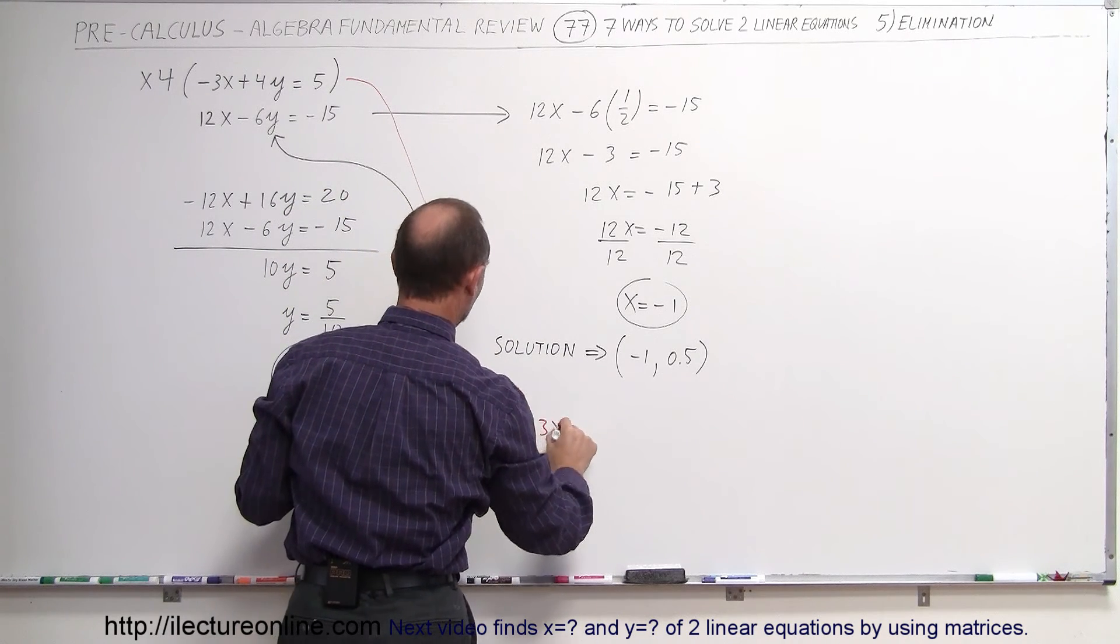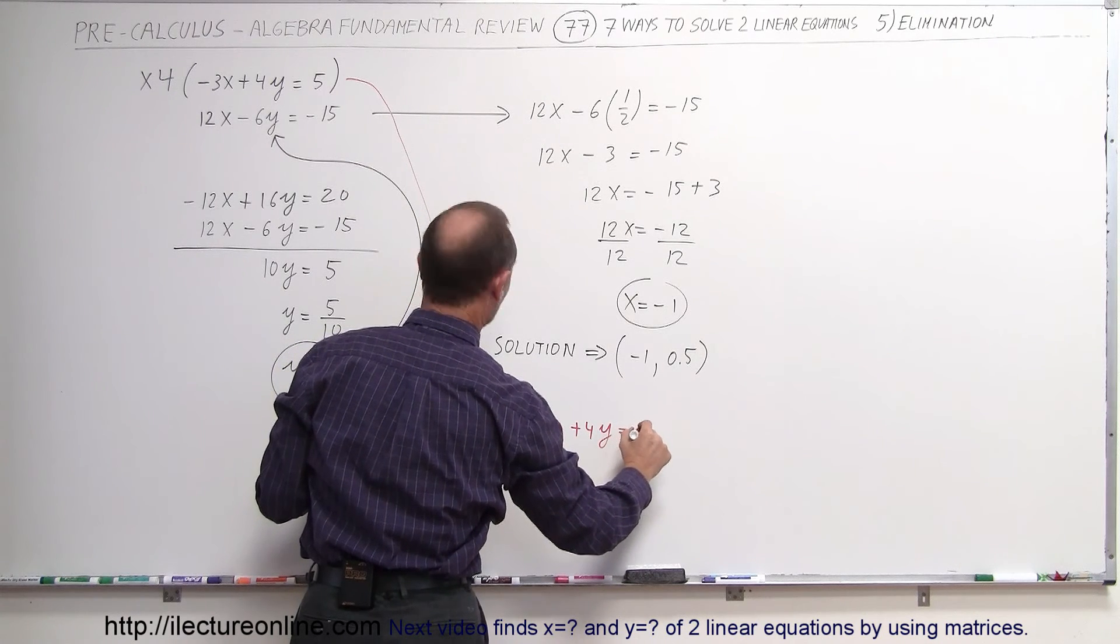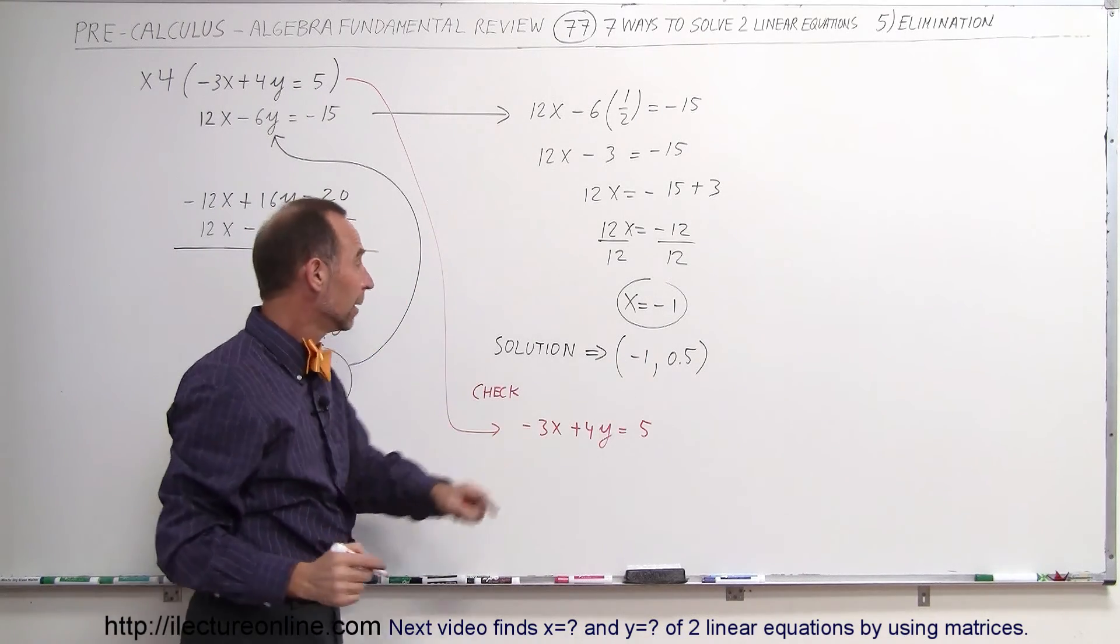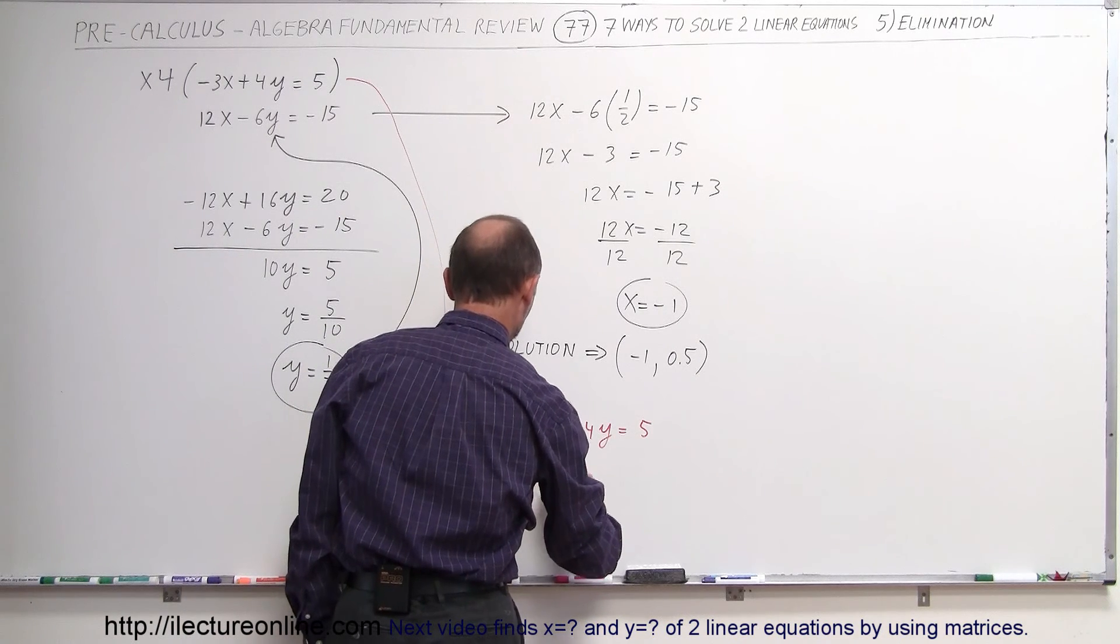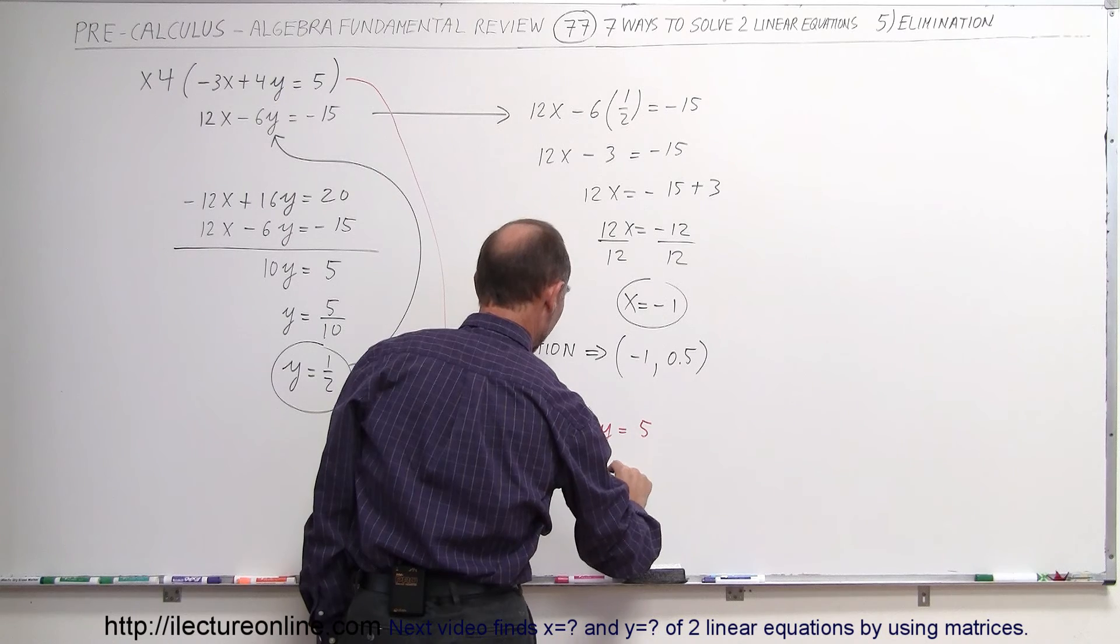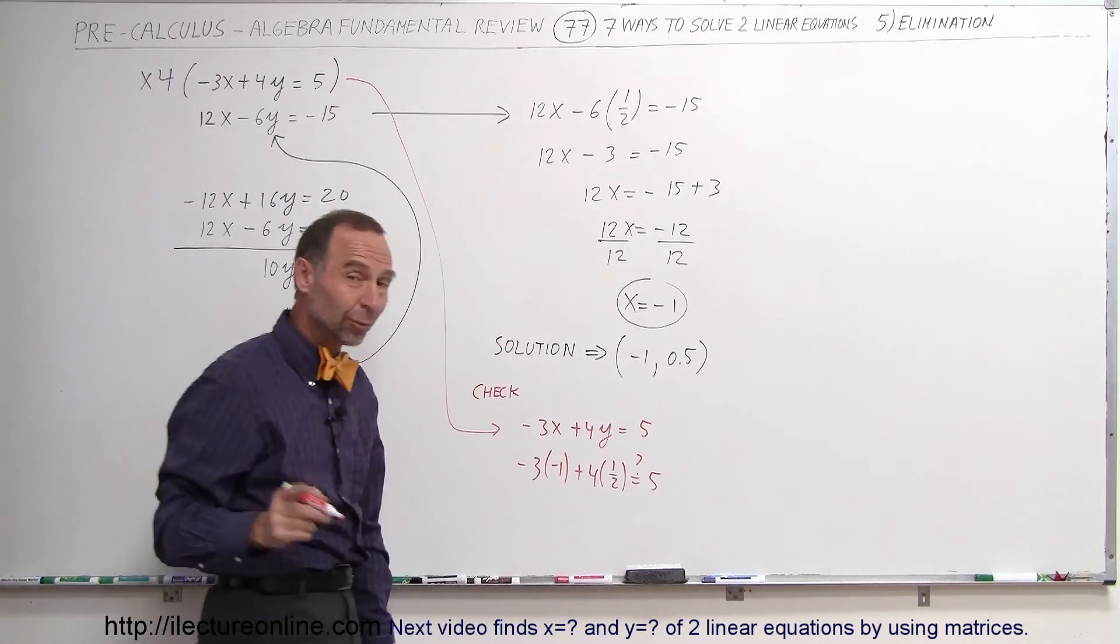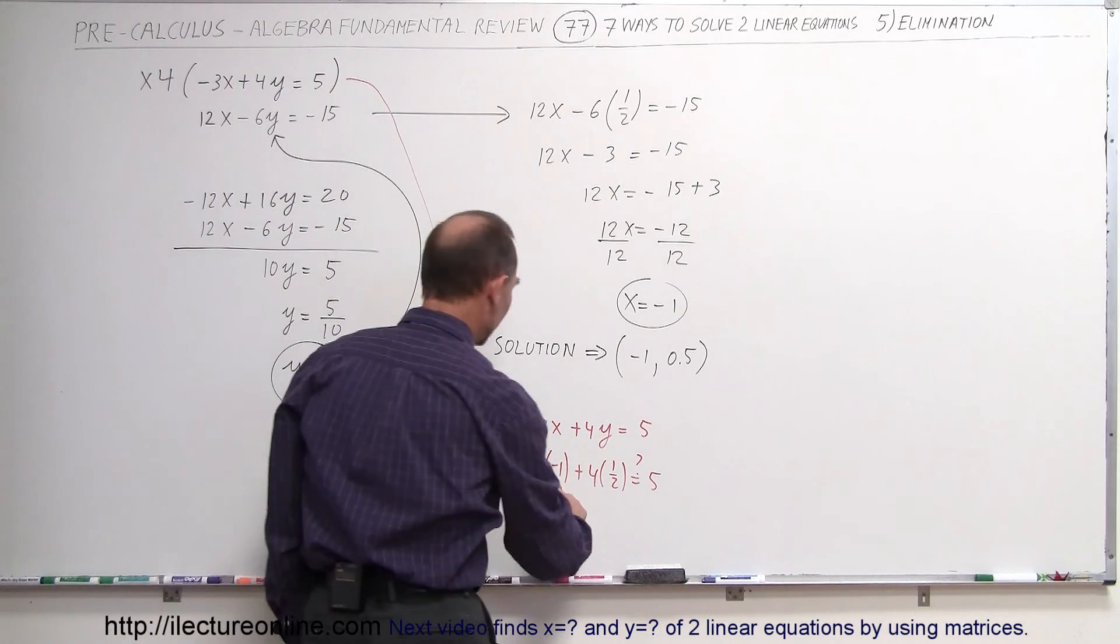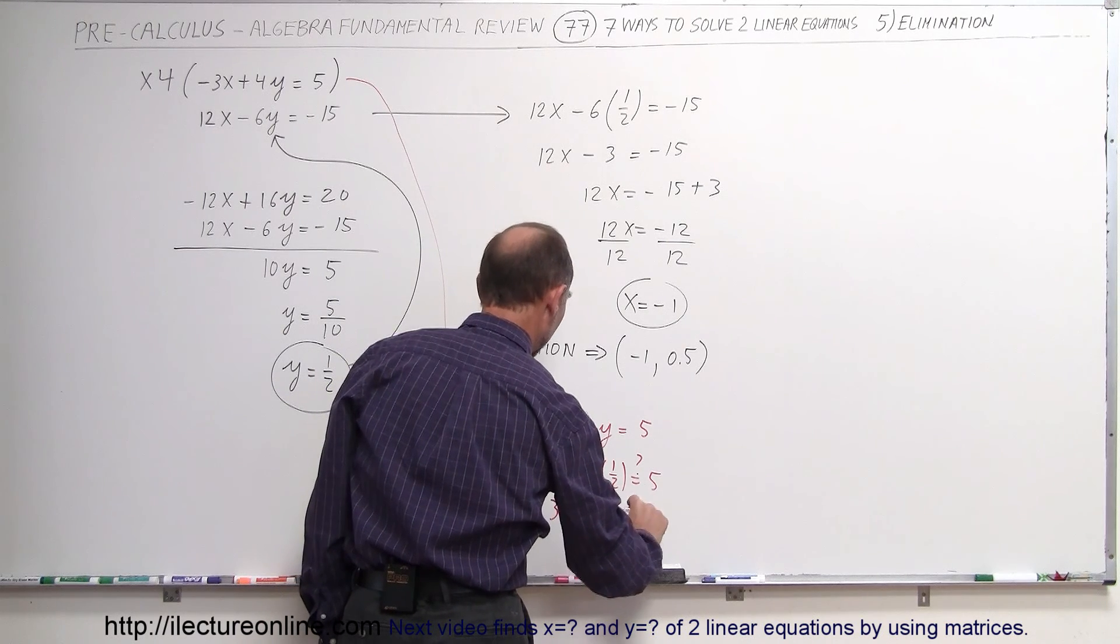We're going to take the first equation. That equation is minus 3x plus 4y equals 5. So let's plug in for x, a minus 1, and for y, 0.5 and see what we get. So, minus 3 times minus 1 plus 4 times 1 half, is that question mark equal to 5? If it is, we did the problem correctly. If it's not, we better go back and see what we did wrong. So, minus 3 times minus 1, that's a plus 3. 4 times 1 half is plus 2. Is that equal to 5?